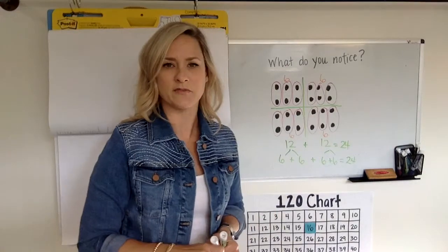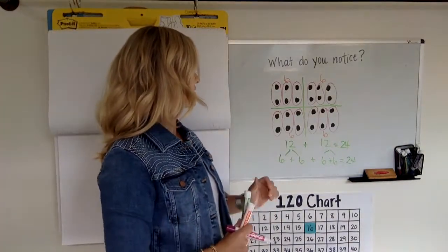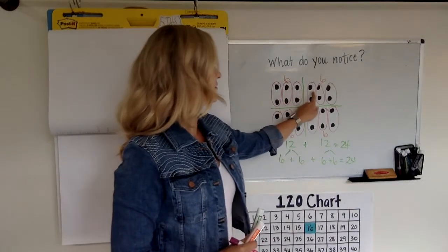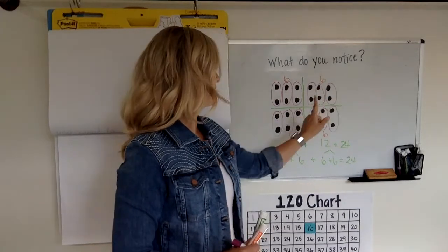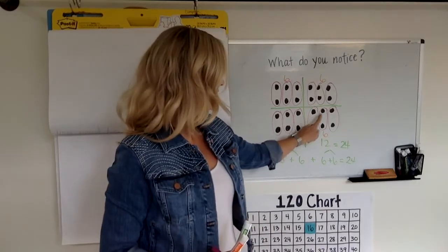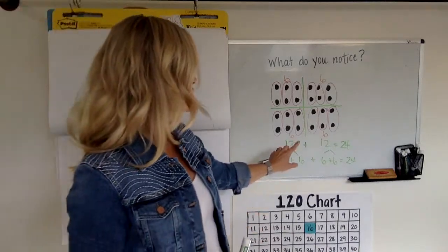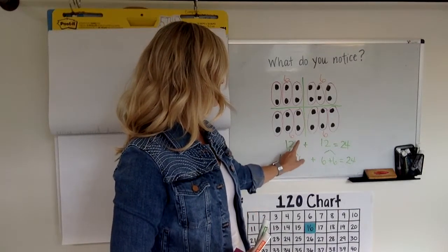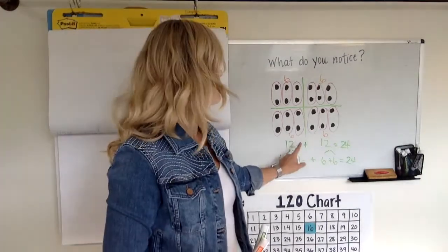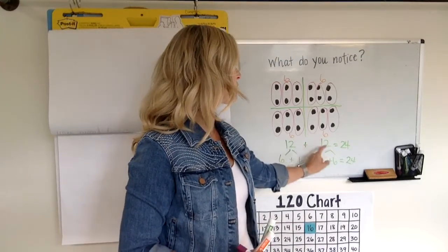So how many groups of two did it take to make 24? So let's find out. How many groups of two? There's one group of two, two, three, four, five, six groups, seven, eight, nine, 10 groups, 11 groups, 12 groups, two groups of 12. I said that backwards. 12 groups of two make 24. And you can see when it was reversed, we had two groups of 12 that make 24.